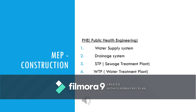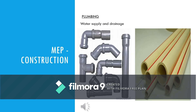Public health engineering — PHE — plays a major role. Water supply system, drainage system, STP, WTP — sewage treatment plant, water treatment plant, etc. In plumbing, for drainage and water supply we have different types of pipes used for different purposes, which we will study in detail in the upcoming videos.